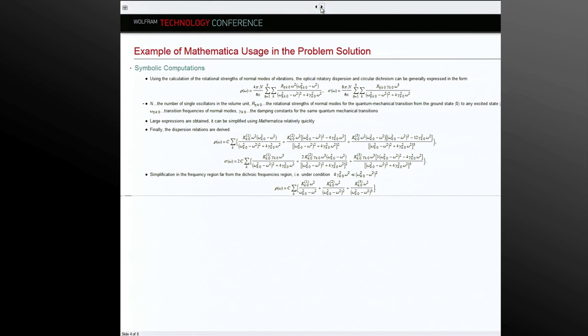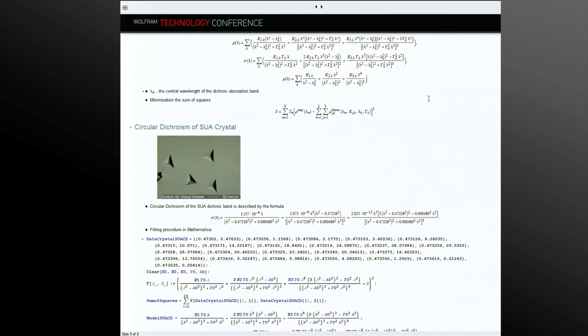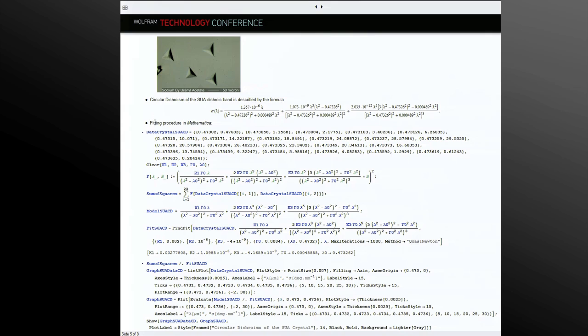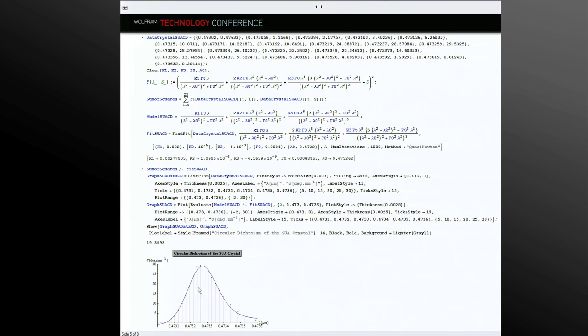Very quickly I will show you experimental data interpretation for two crystals. The first is sodium urinary acetate crystal and its circular dichroism. We obtained it using fitting procedure in Mathematica and minimization of sum of squares. We obtained this result for circular dichroism in comparison with experimental data.